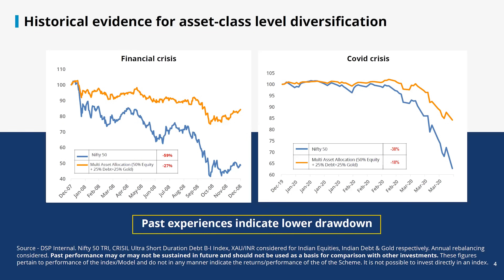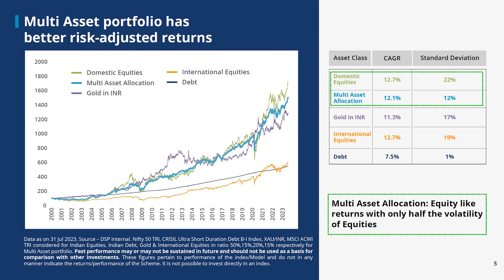As you can see, the fall during sharp market corrections is relatively lower in multi-asset strategies than in the benchmark index. Here you can see the multi-asset allocation strategies have given nearly equity returns with far lesser volatility. Standard deviation of an investment into domestic equities is close to 22%, while that in multi-asset allocation strategies has been around 12%.